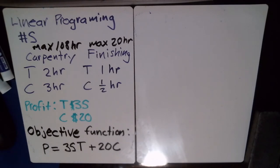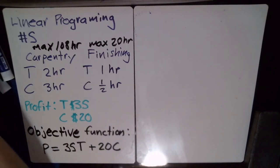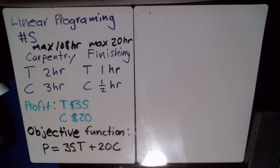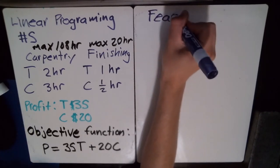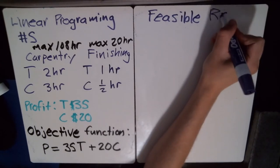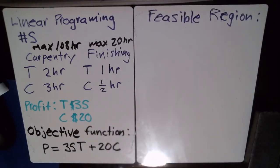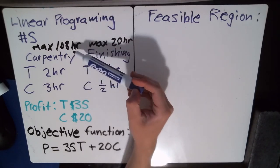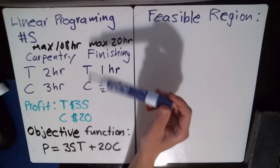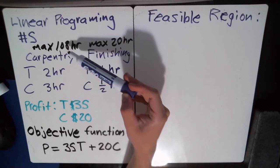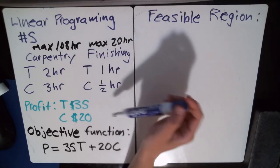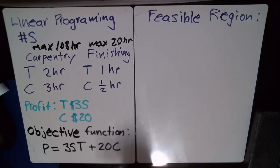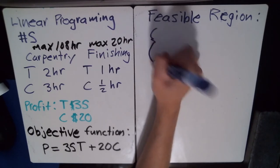Now that we have the objective function — the thing we want to make as big as possible — we need to look at the feasible region. To do that, I need to create some inequalities that describe the constraints in this problem: how much time can I spend on carpentry, and how much time can I spend on finishing?